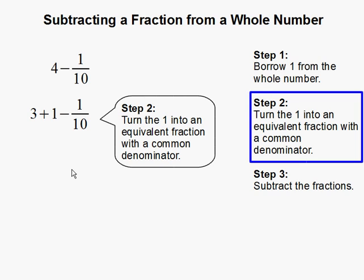Step 2: Turn the 1 into an equivalent fraction with a common denominator. So we're going to change 1 to 10 over 10. 10 over 10 is equivalent to 1, and it has the same denominator as 1 over 10. We do so that we can subtract more easily.